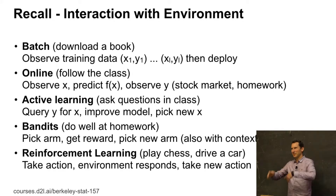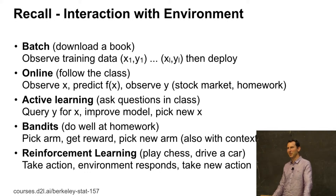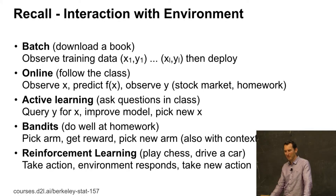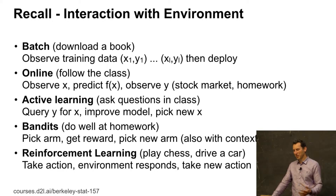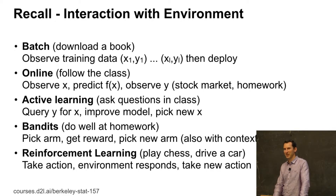In active learning, you can actually interact with the environment and run experiments. In computational advertising, you might show a weird ad you're not sure about — but if you try it out, you'll know. With bandits, you decide in sequence which arm you pick. And in reinforcement learning, you take an action, the environment responds, and then you take a new action. For instance, if you're driving a car and take the wrong action, you end up in a tree. Or if you turn off all the fans for your server center, it overheats and you're out of a job. You take an action, the environment responds — and it remembers.